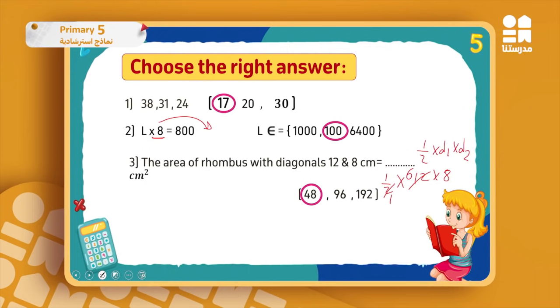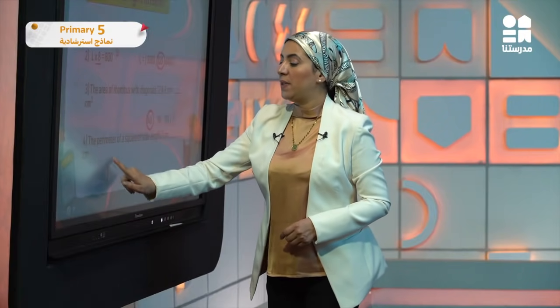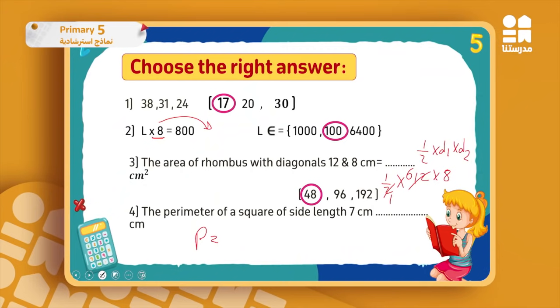Number four: the perimeter of a square of side length 7 centimeters. The formula for perimeter of a square is P equals side times 4, because the perimeter is the outer distance around any shape, and the square has four equal sides. Then here it will be 7 times 4, which is 28 centimeters. So my choice is 28 centimeters.